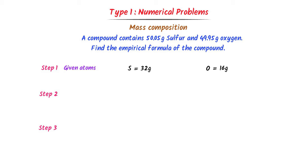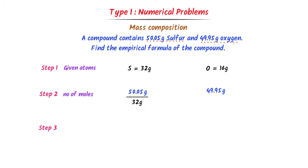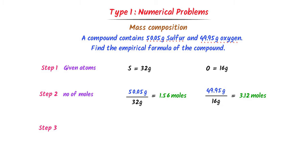In the second step, I calculate the number of moles of the given masses. The given mass of sulfur is 50.05 grams and that of oxygen is 49.95 grams. I divide each by their respective atomic masses — sulfur by 32 and oxygen by 16. After calculation, I get 1.56 moles of sulfur and 3.12 moles of oxygen.